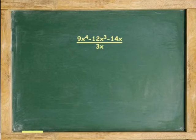Another example: divide 9x to the fourth minus 12x cubed minus 14x by 3x. First term, 9 divided by 3 equals 3, and one x gets cancelled.